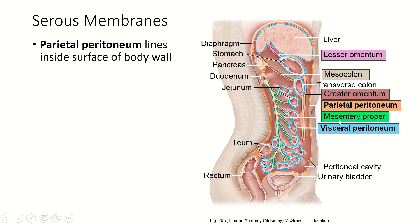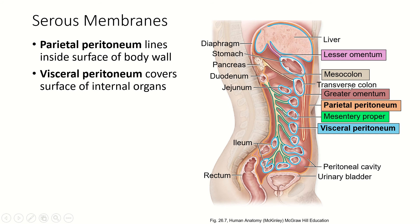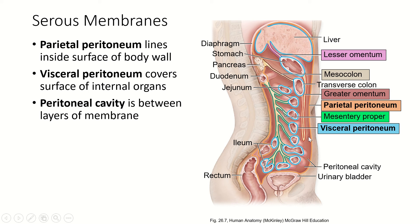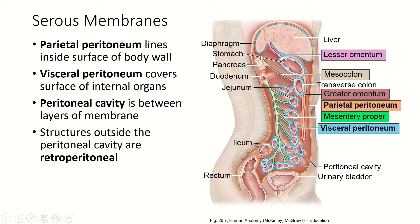Now let's go and meet all of these structures. The parietal peritoneum lines the inside of the body wall — that's the orange layer here — and you can see it goes all the way around the abdominal cavity. Almost everything in the abdominal cavity is within this parietal peritoneum, with a couple of exceptions. The visceral peritoneum is the layer that covers all of the organs, and the space between those two layers is the peritoneal cavity. Things outside of the parietal peritoneum are considered retroperitoneal — the pancreas, the kidneys, most of the duodenum, part of the large intestine, the rectum, and the anus are all retroperitoneal.